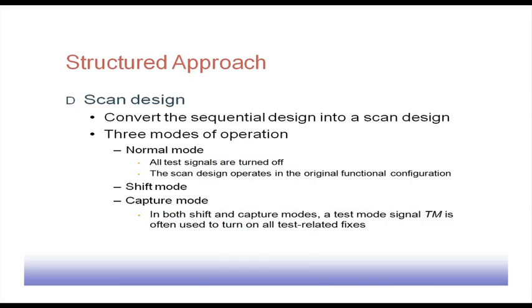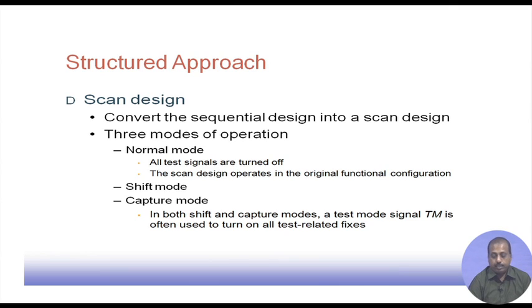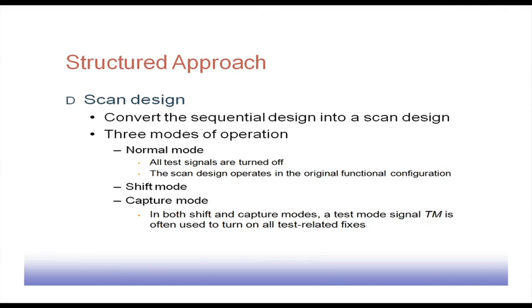There are three modes of operation in a scan-based design. In normal mode, all test signals are turned off — there is no scan chain coming into picture and the scan design operates in its original configuration, the same as the original circuitry. In shift mode, we shift the test pattern into the scan chain. In capture mode, the response of the circuit is captured corresponding to the applied test pattern — the response gets loaded into the scan chain. Then there is another shift out, which is not shown explicitly, because while shifting in the next test pattern in shift mode, the previous response can be shifted out simultaneously.